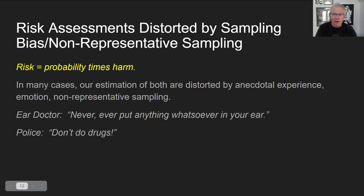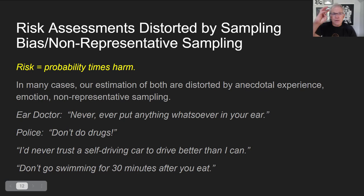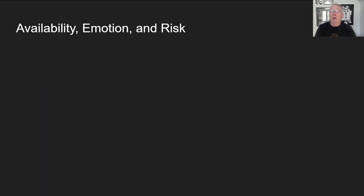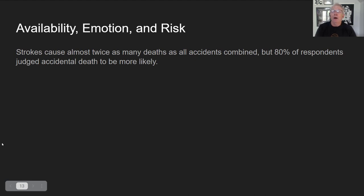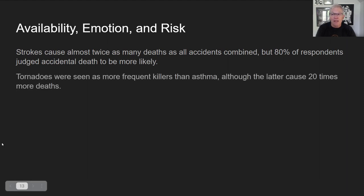These are all distorted ideas about risk — inflating probabilities or harms due to emotion and availability. Kahneman cites research showing strokes cause almost twice as many deaths as all accidents combined, but 80% of respondents judge accidental death as more likely. People are more afraid of accidental death even though strokes are far more common. Likewise, tornadoes are seen as more frequent killers than asthma, even though asthma causes death 20 times more often. Tornado imagery is vivid, lurid, and scary — it gets on the news and you can't forget it. But news reports of asthma rate increases aren't newsworthy or vivid.